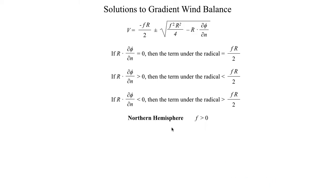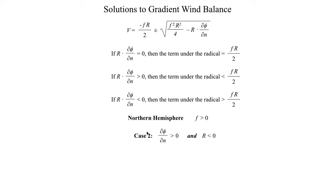Let's change things around. Now let's take a look at the combination of dφ/dn being positive, but this time we're going to make R, the radius of curvature, negative. Going back to our equation and taking the plus solution: multiplying these two values together we get something negative, which means the term under the radical is going to be something larger than F times R over 2. Since R is negative, the leading term becomes positive, so we get a small positive value plus a big positive value, which gives us a positive result.